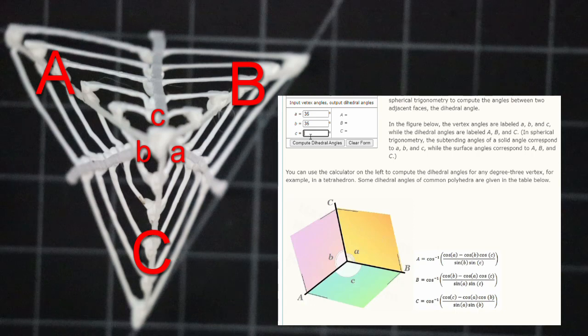And fortunately, all three sides are the same. So we will do it three times. And voila! The dihedral angle is 63 degrees more or less.